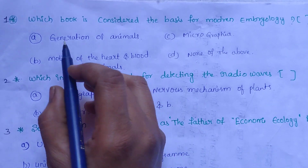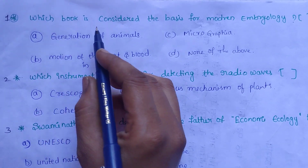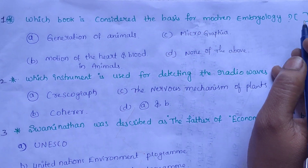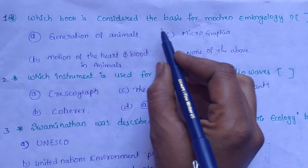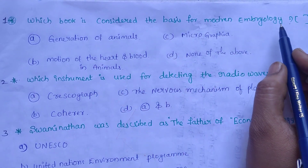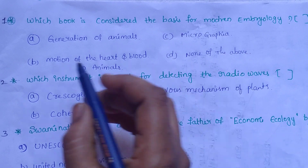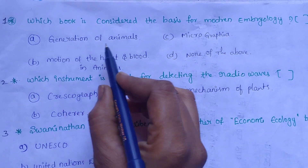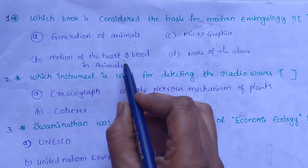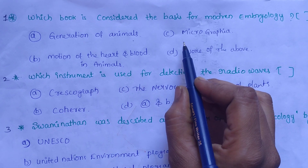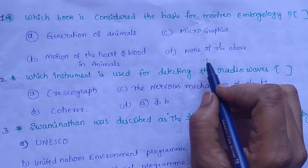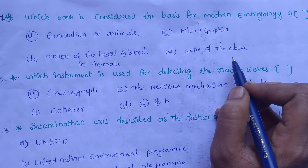The first question is: Which book is considered the basis for modern embryology? The options are: A. Generation of Animals, B. Motion of the Heart and Blood in Animals, C. Micrographia, D. None of the above.